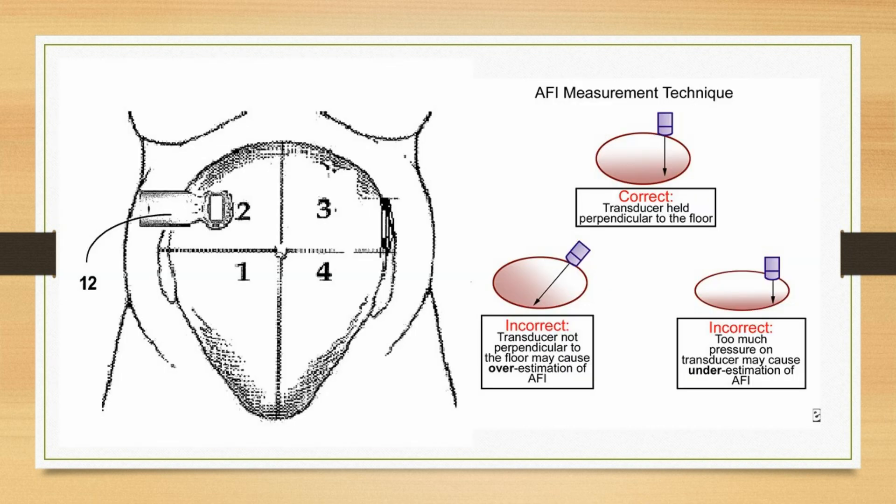In the schematic diagrams we show how we are dividing the uterus into four imaginary quadrants. A vertical line is drawn through the midline and another horizontal line is drawn through the level of the umbilicus, dividing the uterus into four quadrants.